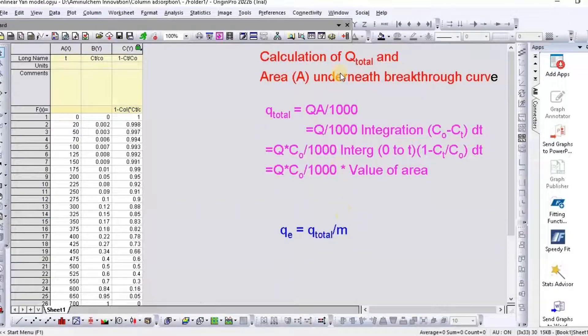Now I will show you how to calculate Qt total and area underneath breakthrough curve using Origin Pro.